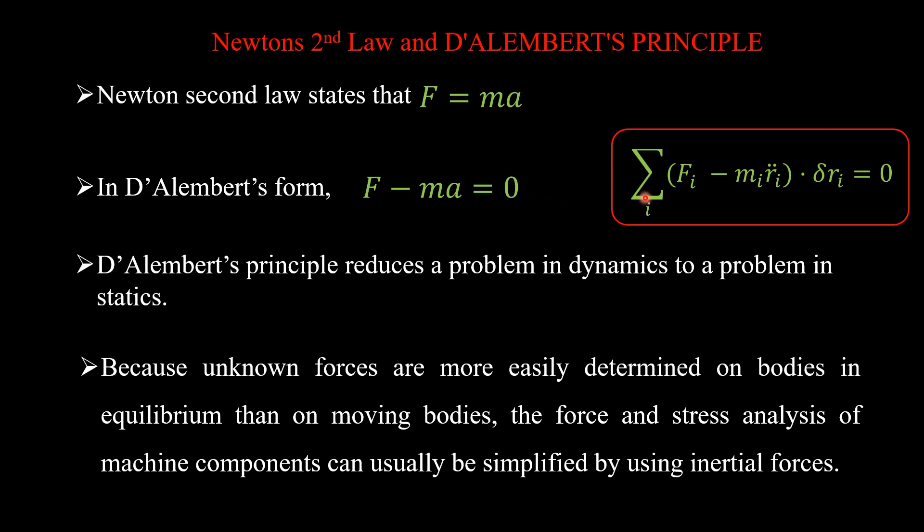So this can be written by all the particles summation over i: summation over i (F_i - m_i r̈_i) · δr_i must be equal to zero.